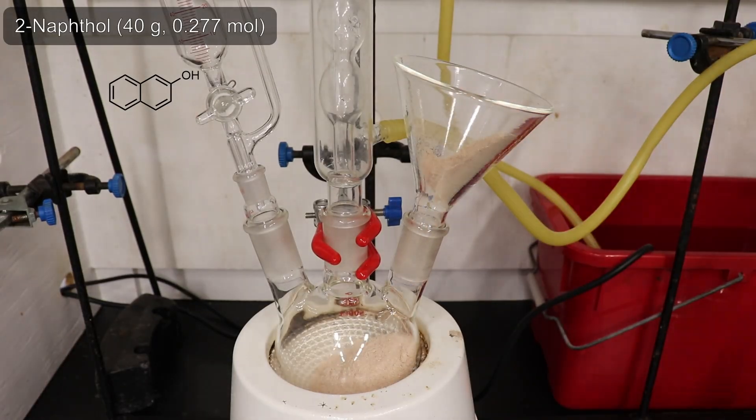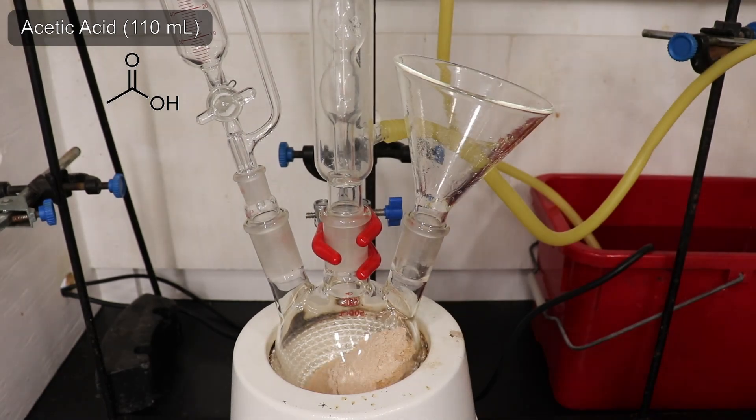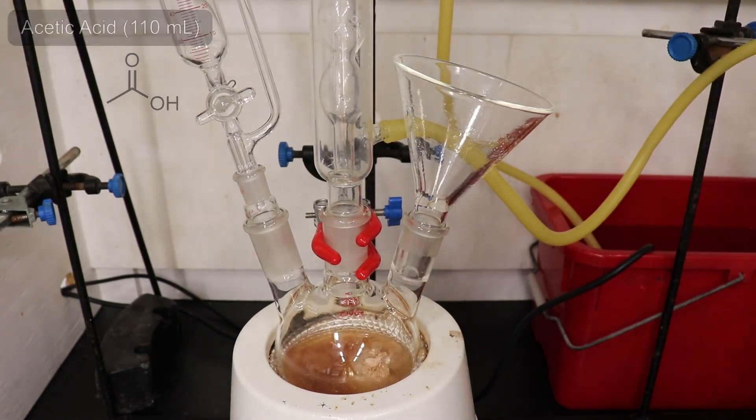Getting started, to a 500 mL round-bottom flask, I added 40 g of 2-naphthol followed by 110 mL of glacial acetic acid.